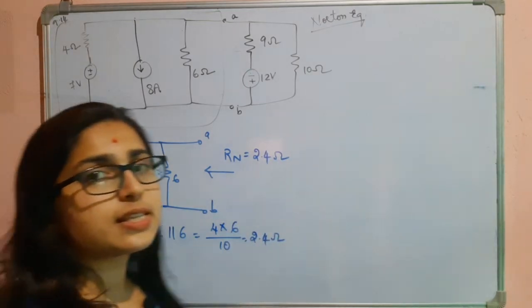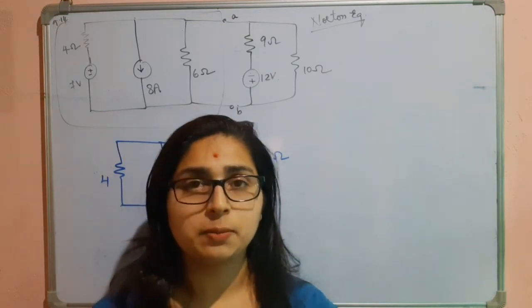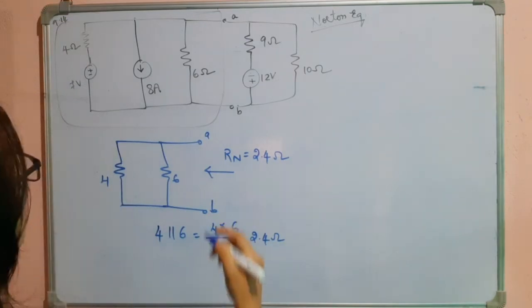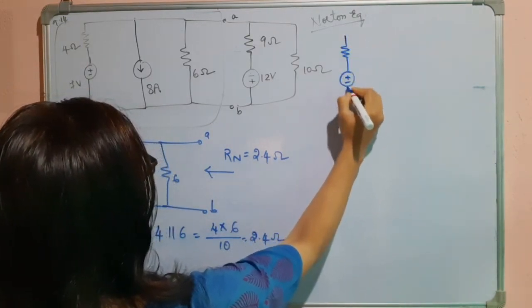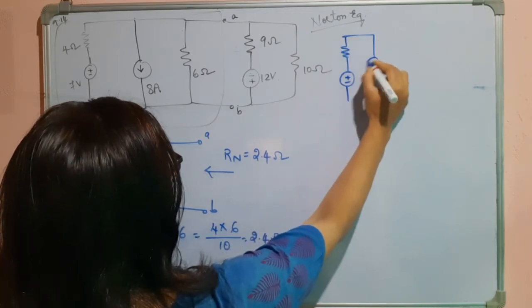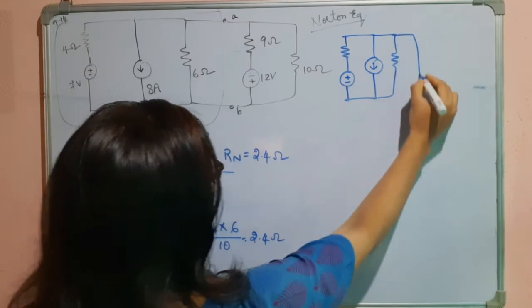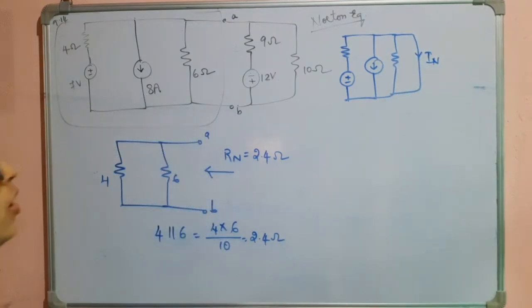Next we have to find the Norton's current. Norton's current is nothing but the short circuit current. That means the terminals A and B should be shorted. So we will bring back all the independent sources into their respective positions. Then we will find out the current that is In. Suppose this is my current In.